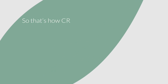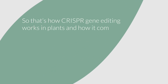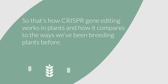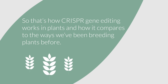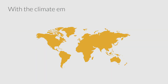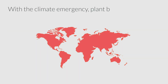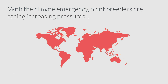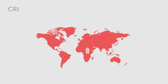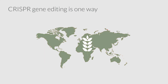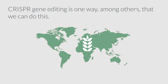So that's how CRISPR gene editing works in plants and how it compares to the ways we've been breeding plants before. With the climate emergency, plant breeders are facing increasing pressures to grow more food sustainably. CRISPR gene editing is one way, among others, that we can do this.